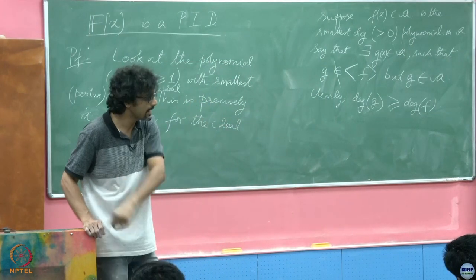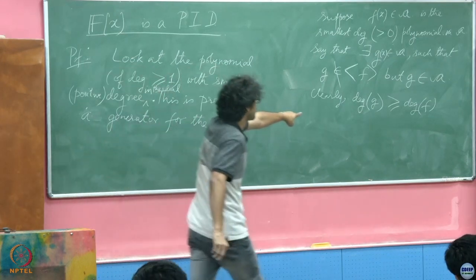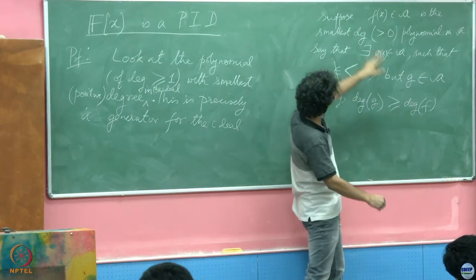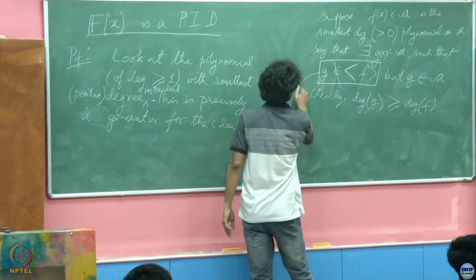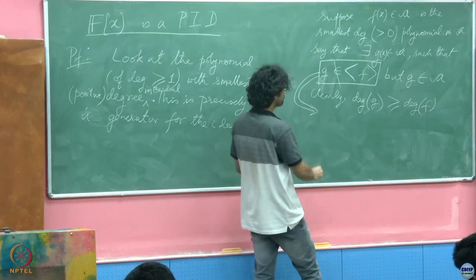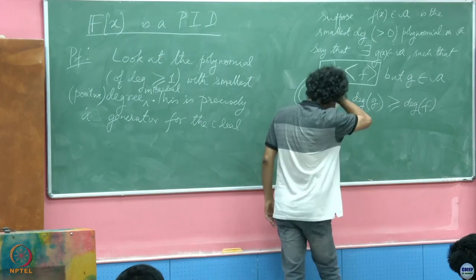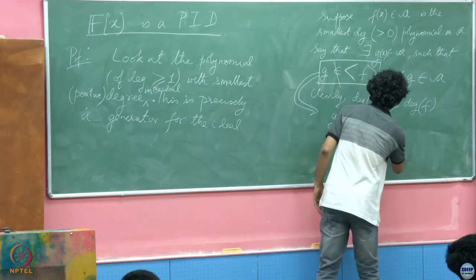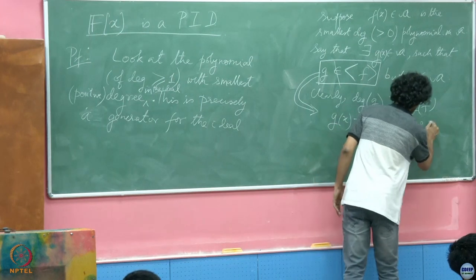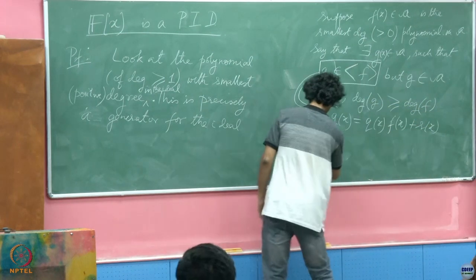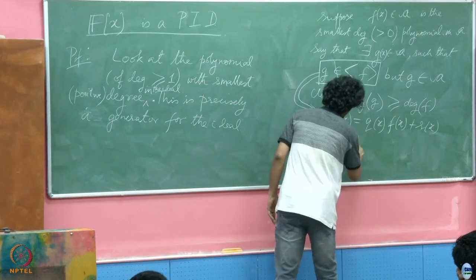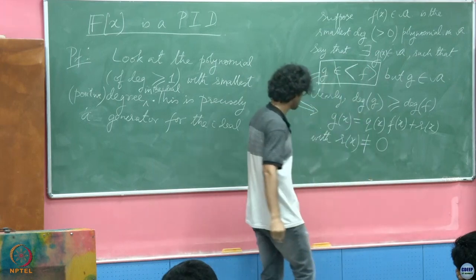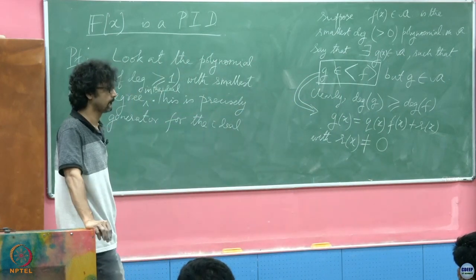What should happen as a result of the division? I should have a non-zero remainder. If I did have a zero remainder, then of course g is generated by f — there is some quotient only and there is no remainder. So if this has to be true, I might as well conclude that g(x) equals some quotient q(x) times f(x) plus r(x), with r(x) not equal to 0.